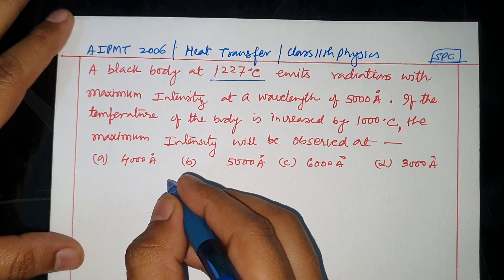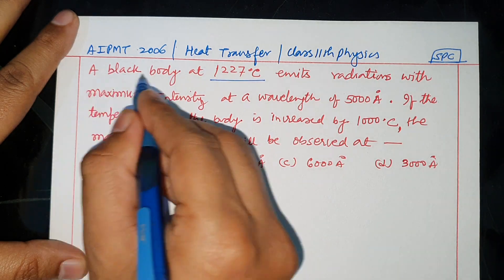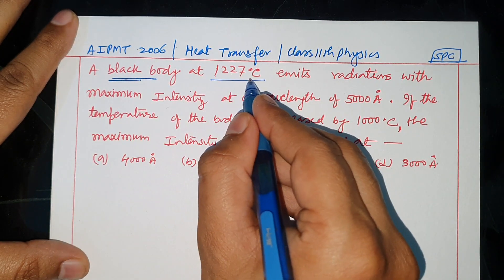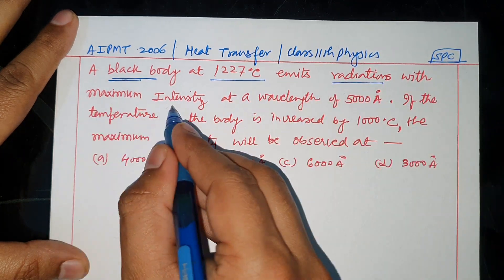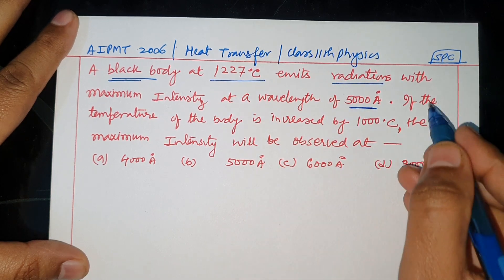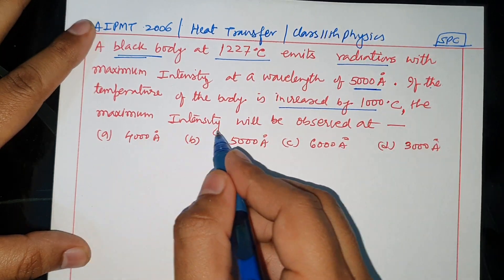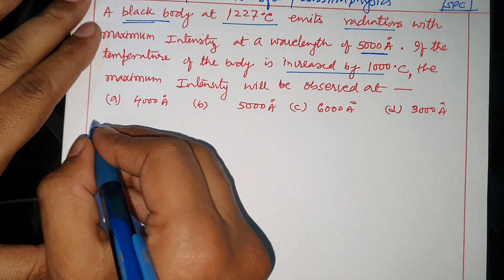Hello dear students, welcome back to my channel Physics SPC. Heat transfer question: A black body at 1227 degree Celsius emits radiation with maximum intensity at a wavelength of 5000 Angstrom. If the temperature of the body is increased by 1000 degree Celsius, the maximum intensity will be observed at which wavelength? This is the solution.